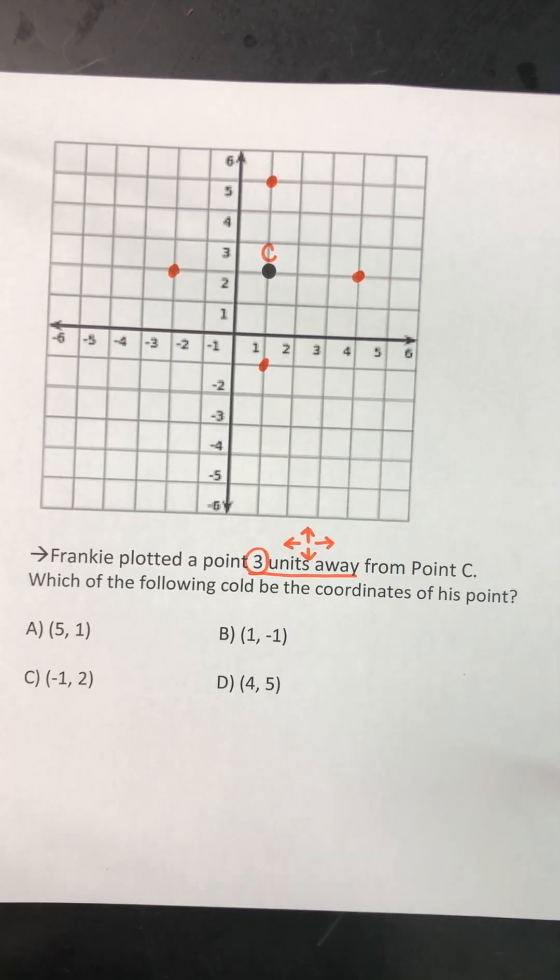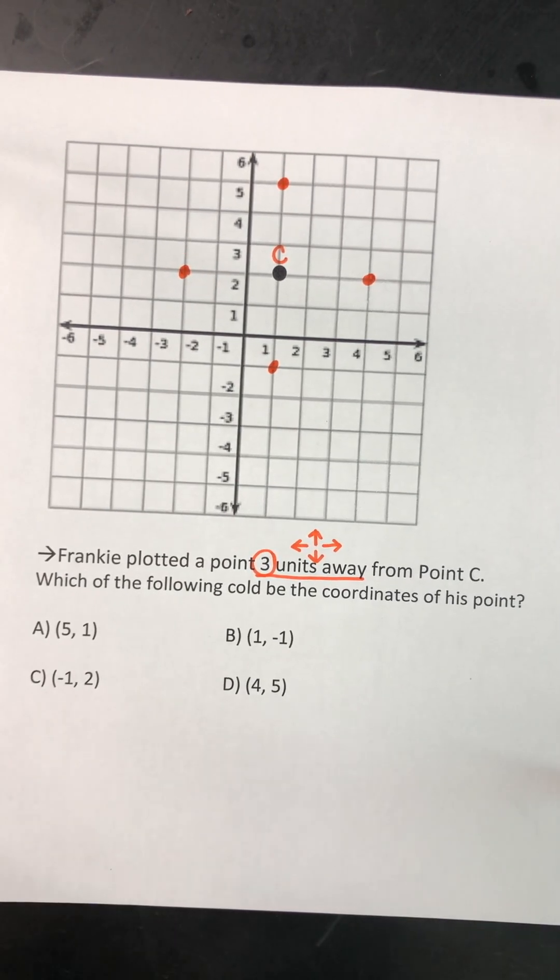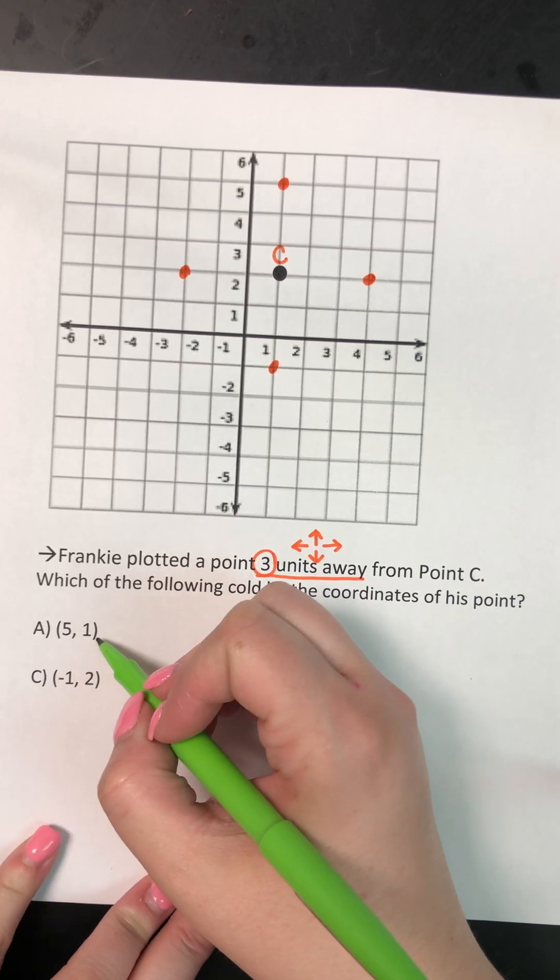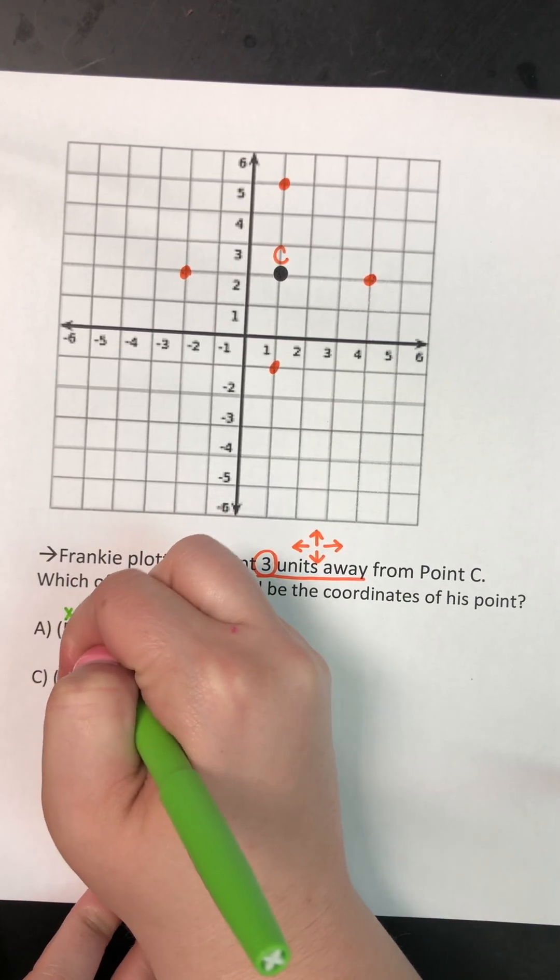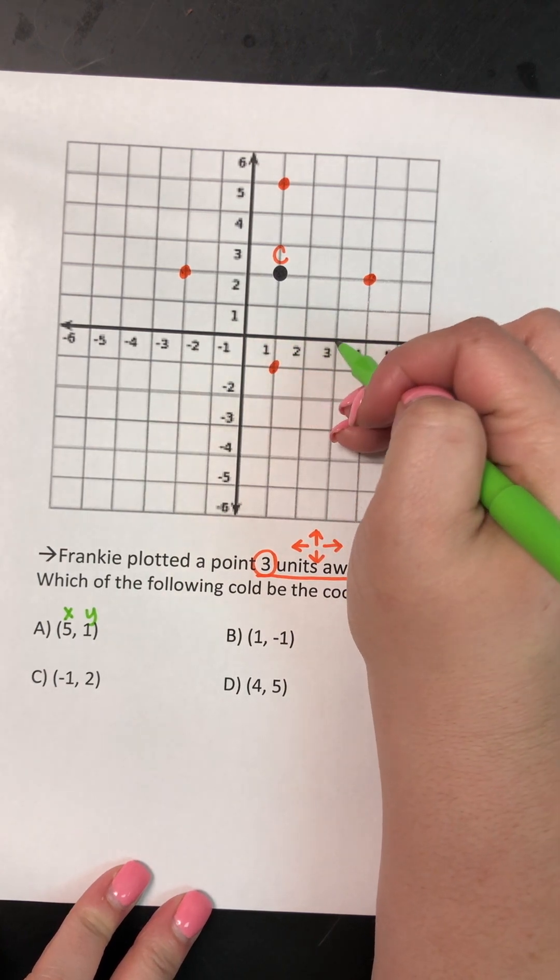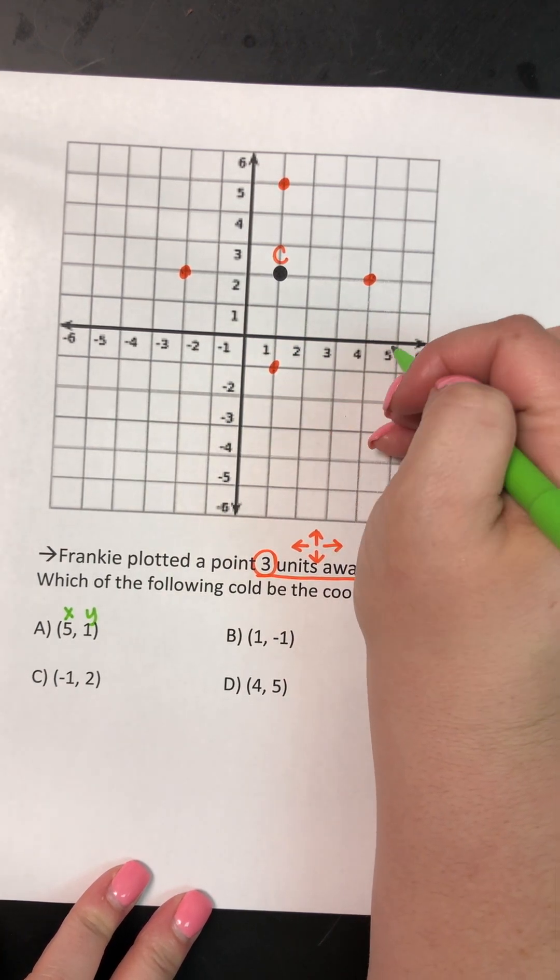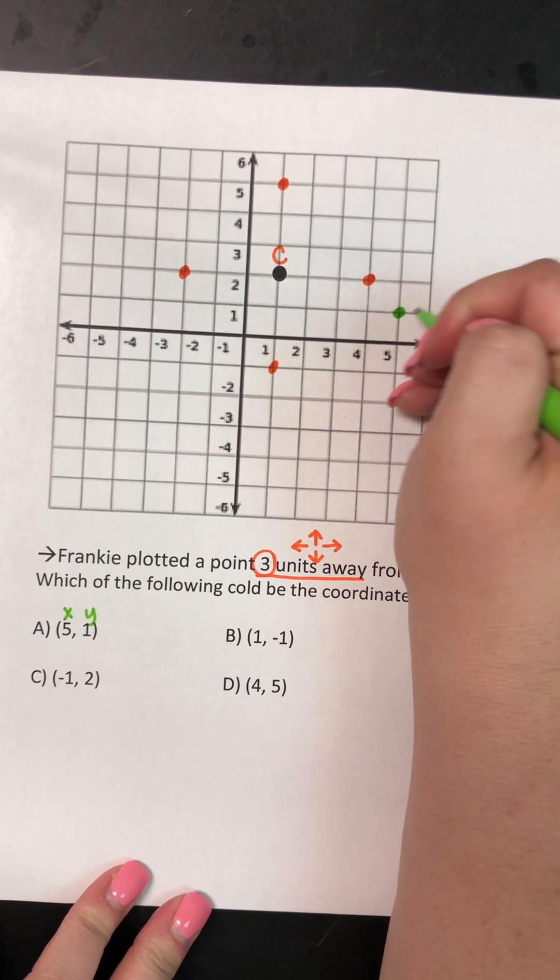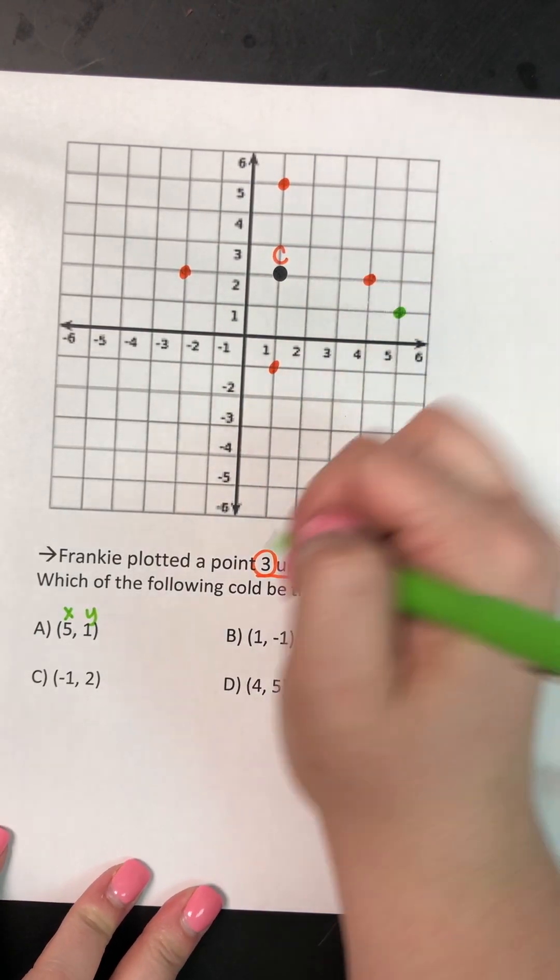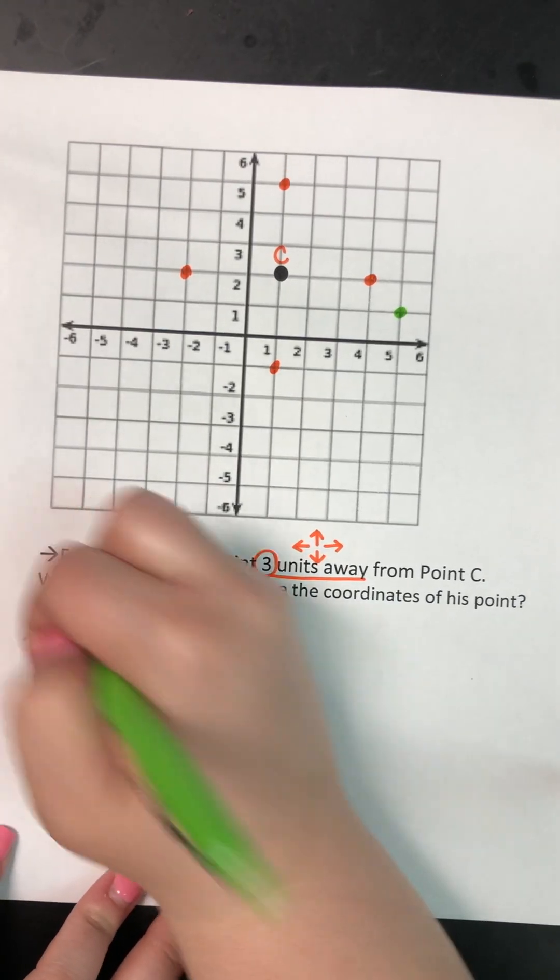So let's look at the points they gave us and see if any of them match. So point A was positive five, positive one. So I'm gonna label my X and Y. I'm gonna go positive five. One, two, three, four, five, and positive one. Is that one of the points I plotted? No. And it is not three units away. So A cannot be right.